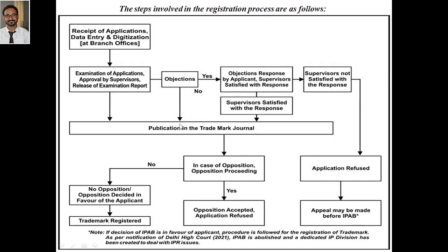If there are no objections, directly publication. If objections are there but rectified and supervisors are satisfied, the trademark goes to publication. Once published, if any oppositions are filed, they will be heard. If opposition is accepted, the application will be refused. If no oppositions are there, or if oppositions are decided in favor of the applicant, then the trademark will be registered. Note that if the IPAB decision is in favor of the applicant, the registration procedure is followed.